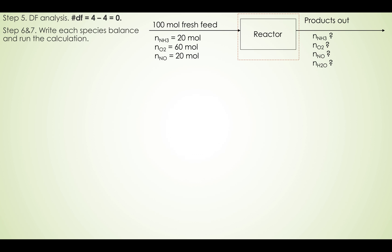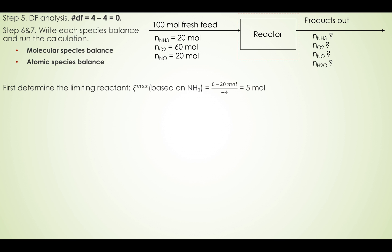We can write down the species balance two ways: molecular species balance and atomic species balance. Before writing the species balance, let's determine the limiting reactant using the extent of reaction. Using the maximum extent of reaction (ξ_max), we can determine which reactant is limiting. Based on ammonia, assume it goes to completion so the output is zero. Using ξ_max, we can calculate how much ammonia is used — final ammonia is zero and input is 20 moles.